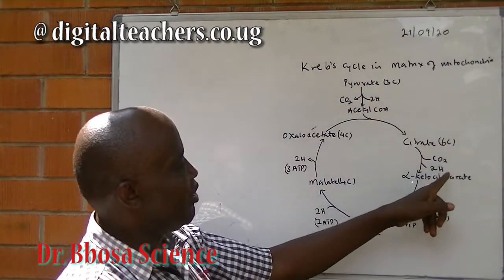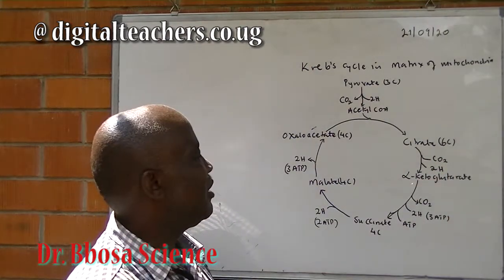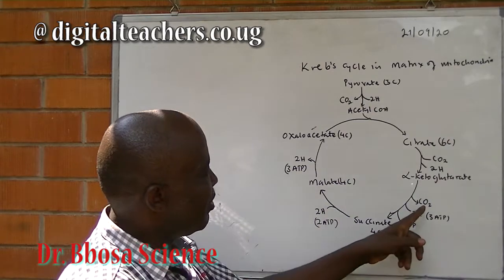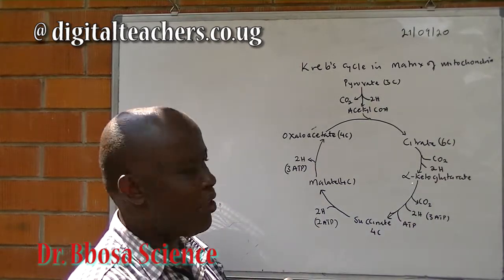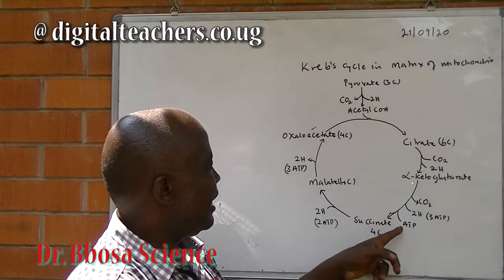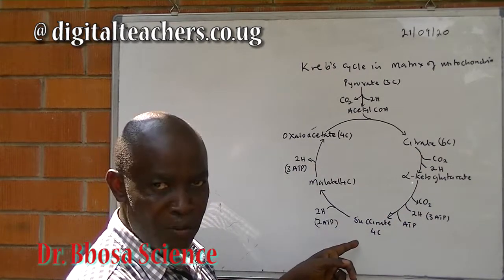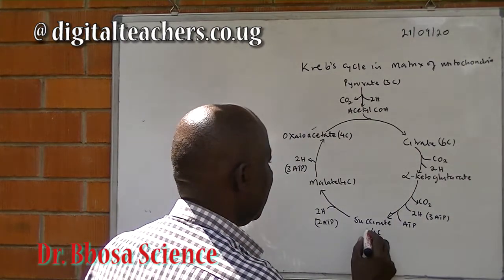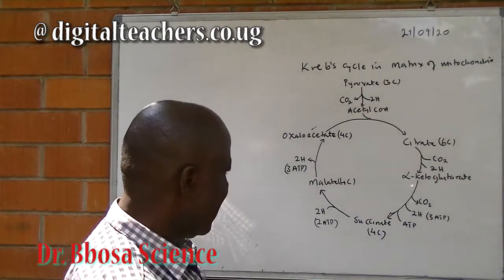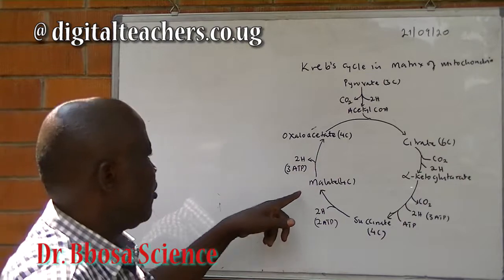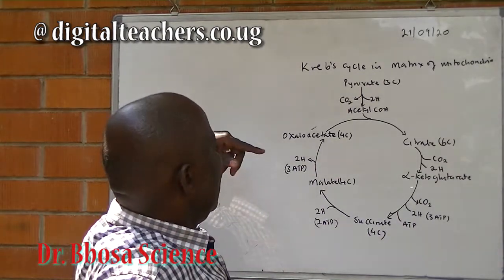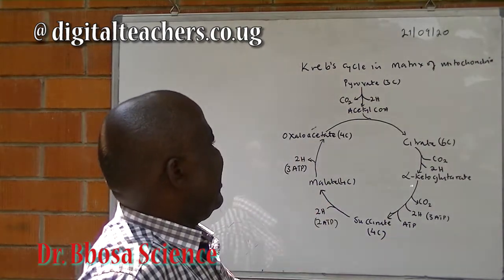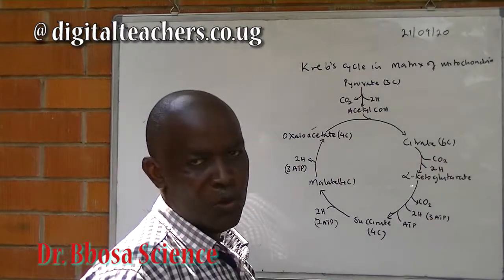Citrate undergoes decarboxylation and oxidation by loss of two hydrogen atoms to form alpha-ketoglutarate. Alpha-ketoglutarate undergoes decarboxylation and oxidation by loss of two hydrogen atoms and the synthesis of ATP to form succinate. Succinate is a four-carbon compound. Succinate is oxidized by loss of two hydrogen atoms to form malate. Then malate is oxidized to form oxaloacetate again, and the cycle repeats.